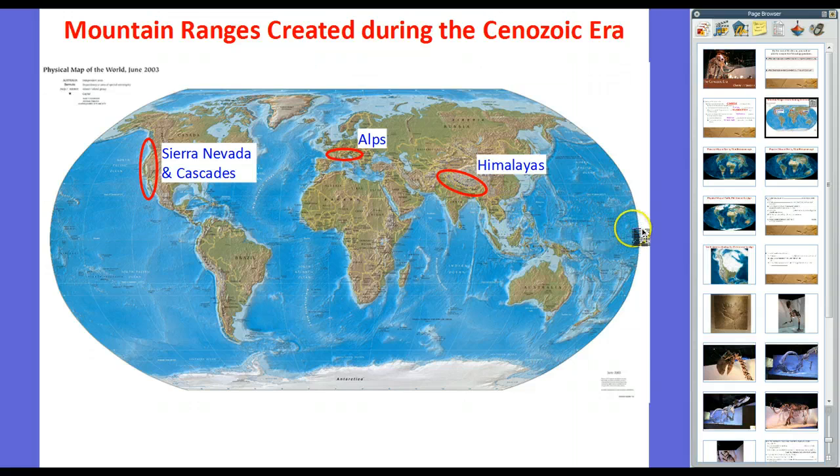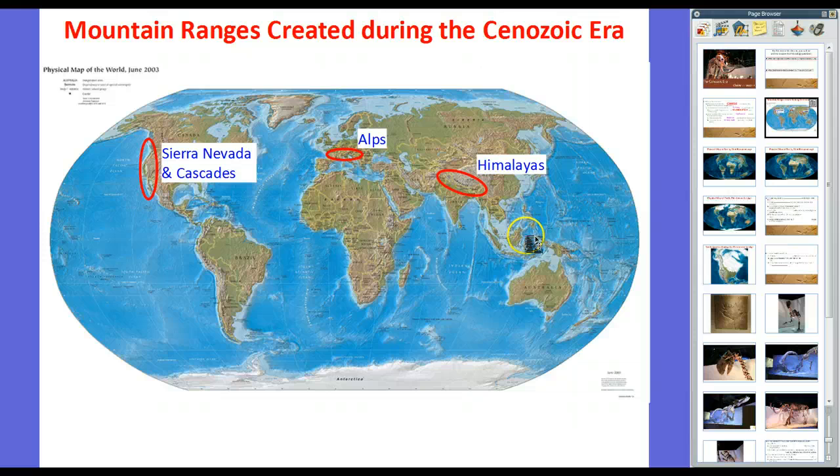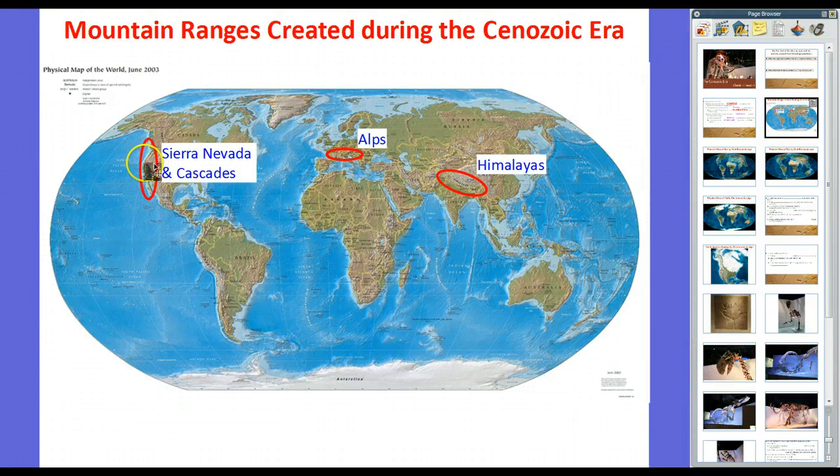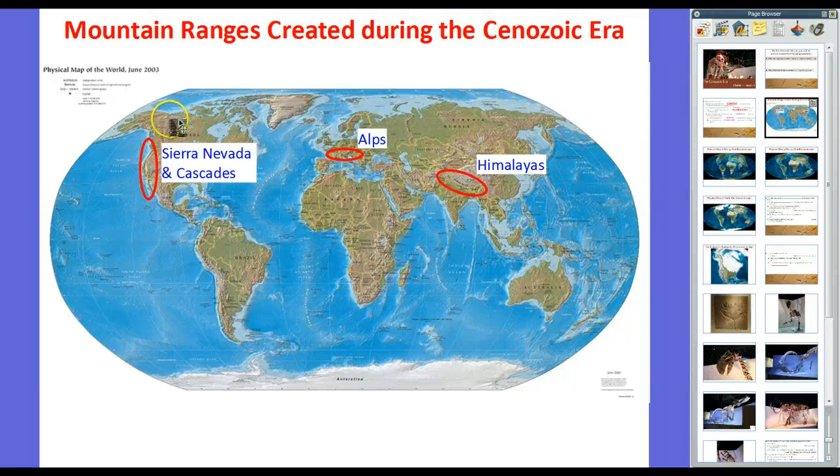And they're actually still growing because of tectonic movement. And also growing are the Sierra Nevadas and the Cascades. The Sierra Nevadas are these mountains right here in California. And the Cascades go through Oregon and Washington State and into British Columbia in Canada.